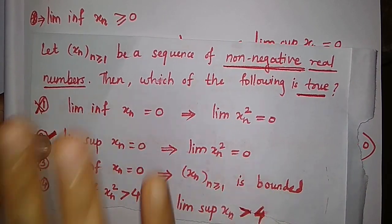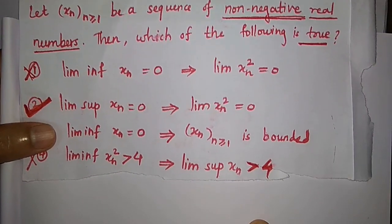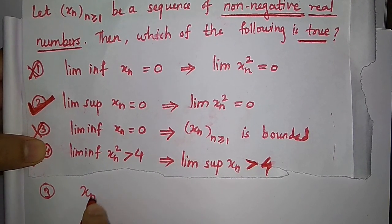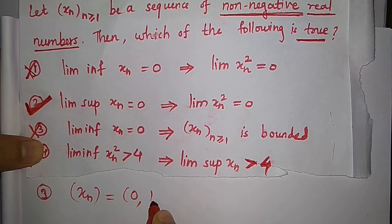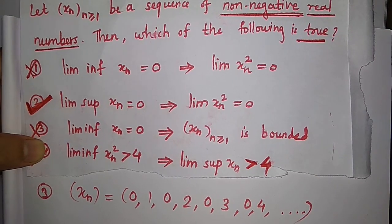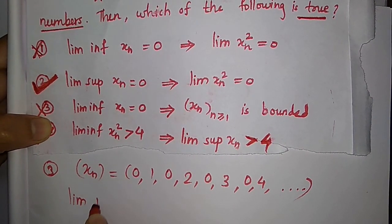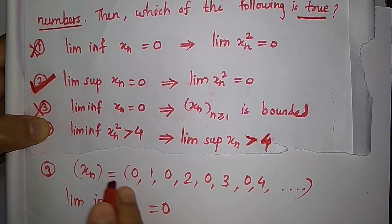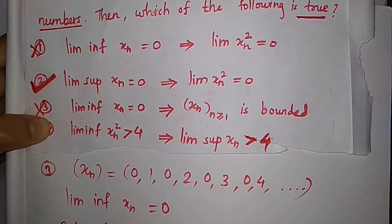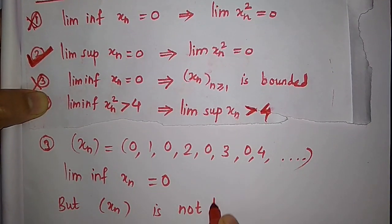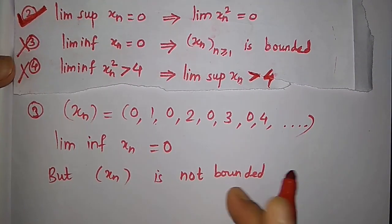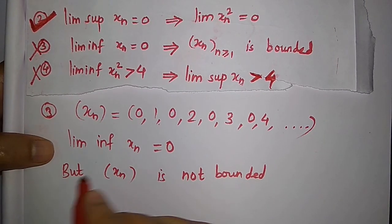For the third option, take xn = 0, 1, 0, 2, 0, 3, 0, 4, ... Here lim inf xn = 0, but the sequence xn is clearly not bounded because the terms 1, 2, 3, 4, ... are increasing without bound. So the third option is also false.